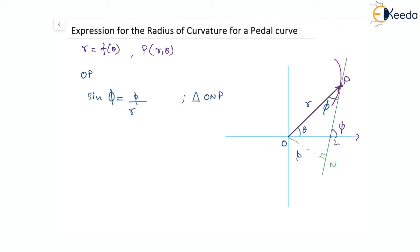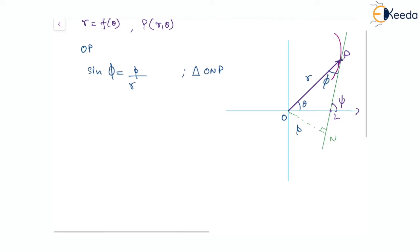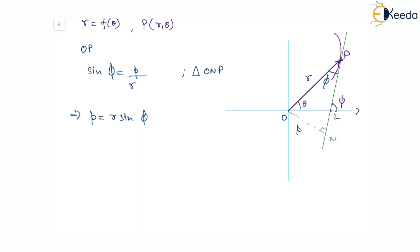In the right-angled triangle ONP, we have sin phi equal to p divided by r. From here we get that p is equal to r sin phi — that is the length of the perpendicular from the pole to the tangent at point P of the curve. Now if we differentiate this with respect to r,